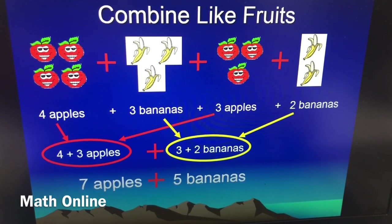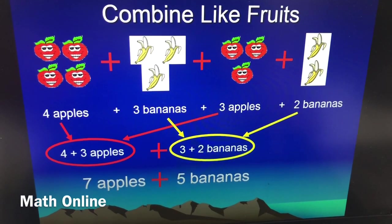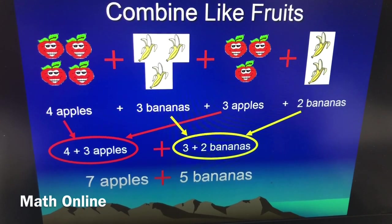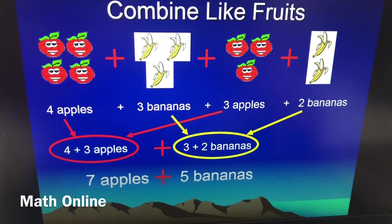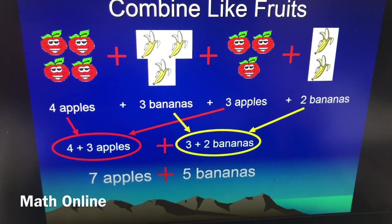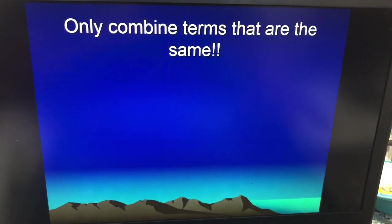So in this case, notice how I'm using words. For apples, I could have just said 4A, A standing for apples, right? So that's what you're going to be doing on your assignments. Okay, so that is the scenario here. Now seven apples and five bananas cannot be combined, so we would leave our answer just like that.